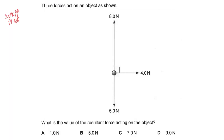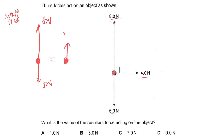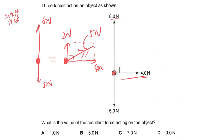In this question, three forces act on an object. At a glance, the resultant force cannot be zero because there is a horizontal force to the right with no horizontal force to the left. To solve this, consider vertical and horizontal forces separately. Vertically: 8 Newton upward and 5 Newton downward give a net 3 Newton upward. Horizontally: 4 Newton to the right. Now you have 3 Newton and 4 Newton at 90 degrees, so the resultant is 5 Newton — answer B.